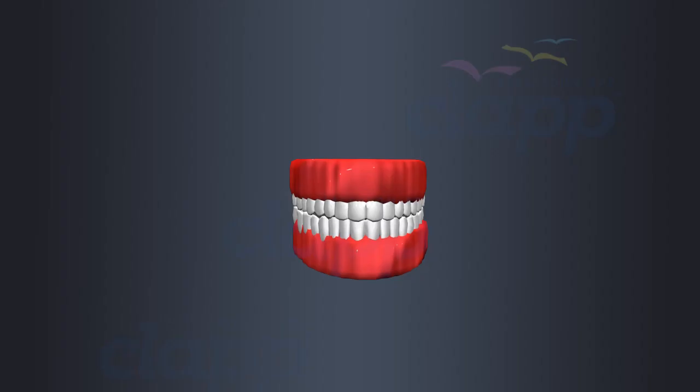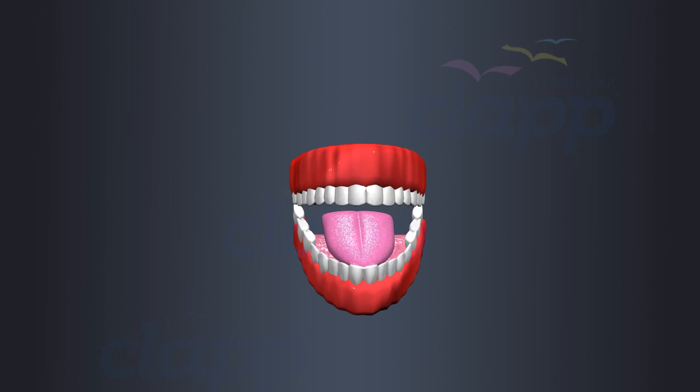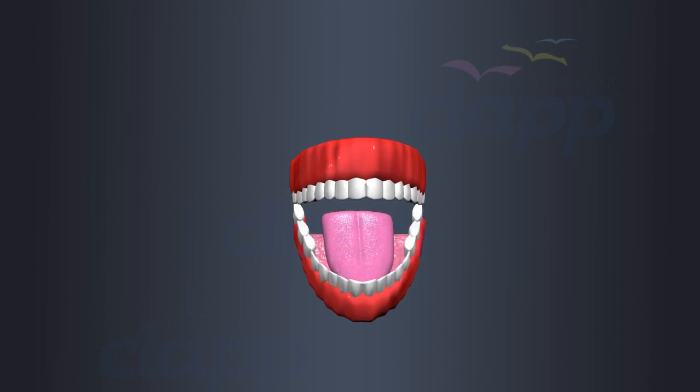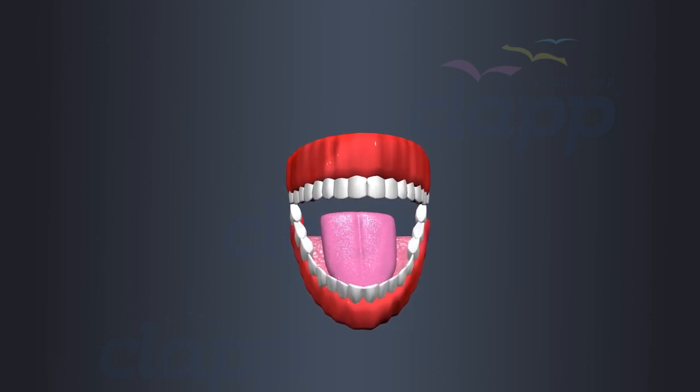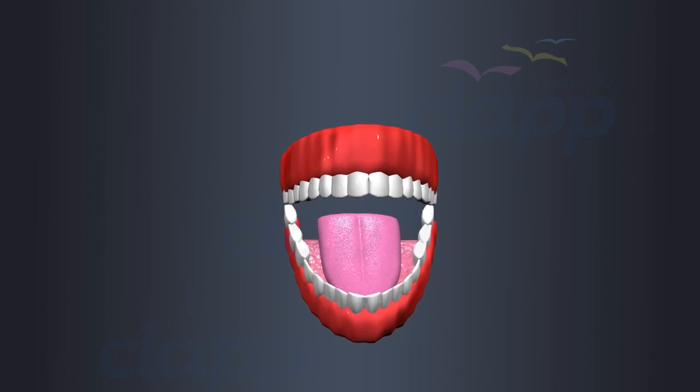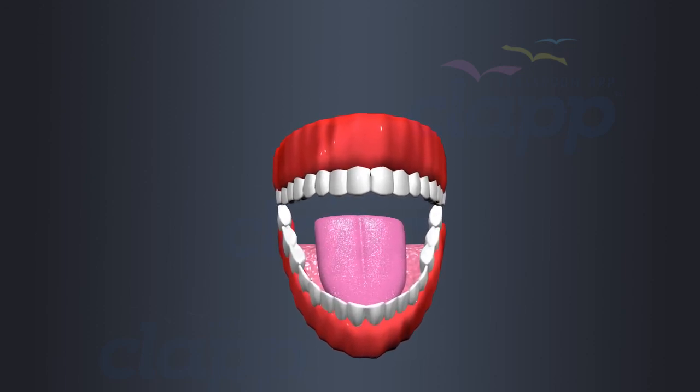The human tongue is a muscular organ located in the mouth. The tongue is primarily composed of skeletal muscle tissue, allowing for precise movement and flexibility.